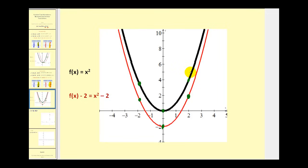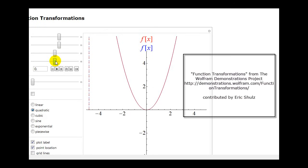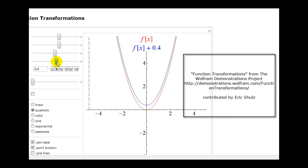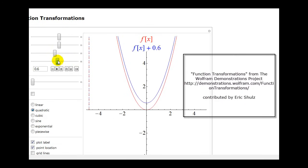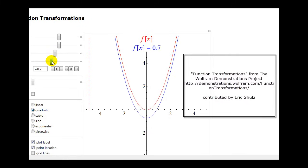Let's take a look at an animation of this as well. As we change the value of D, we'll see how it affects the graph — the translated graph will be in blue. As we increase D, the function is shifted upward. And if we have F of X minus D, the function is shifted down from the original.